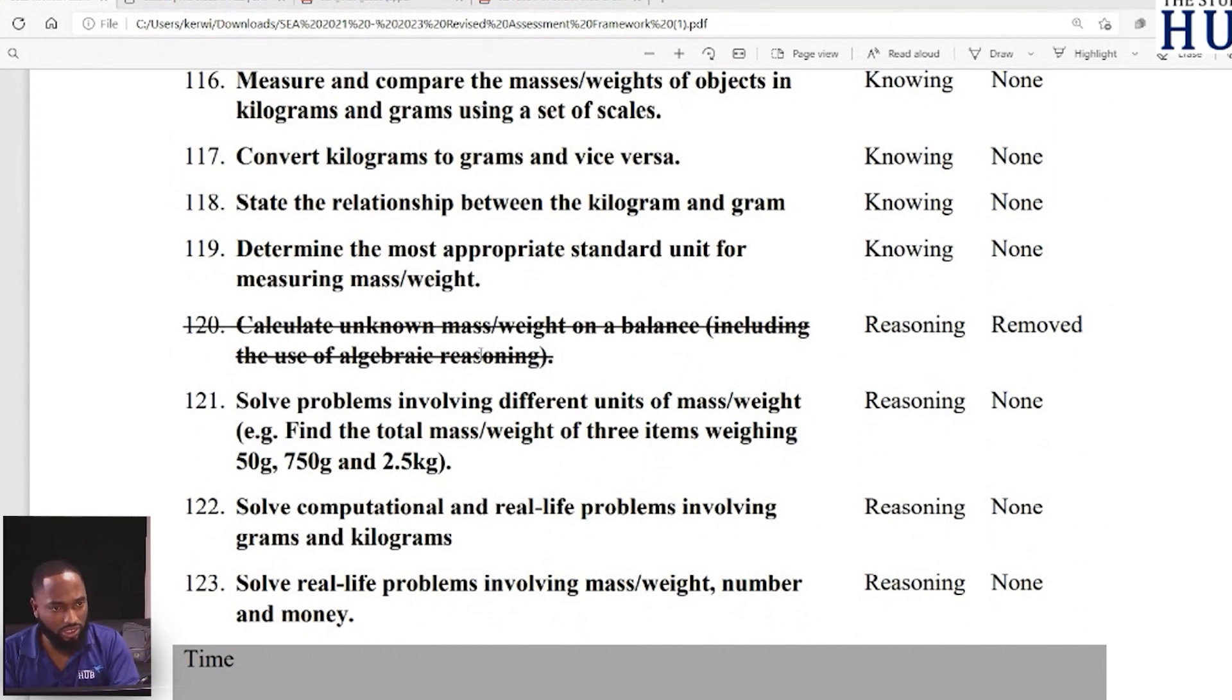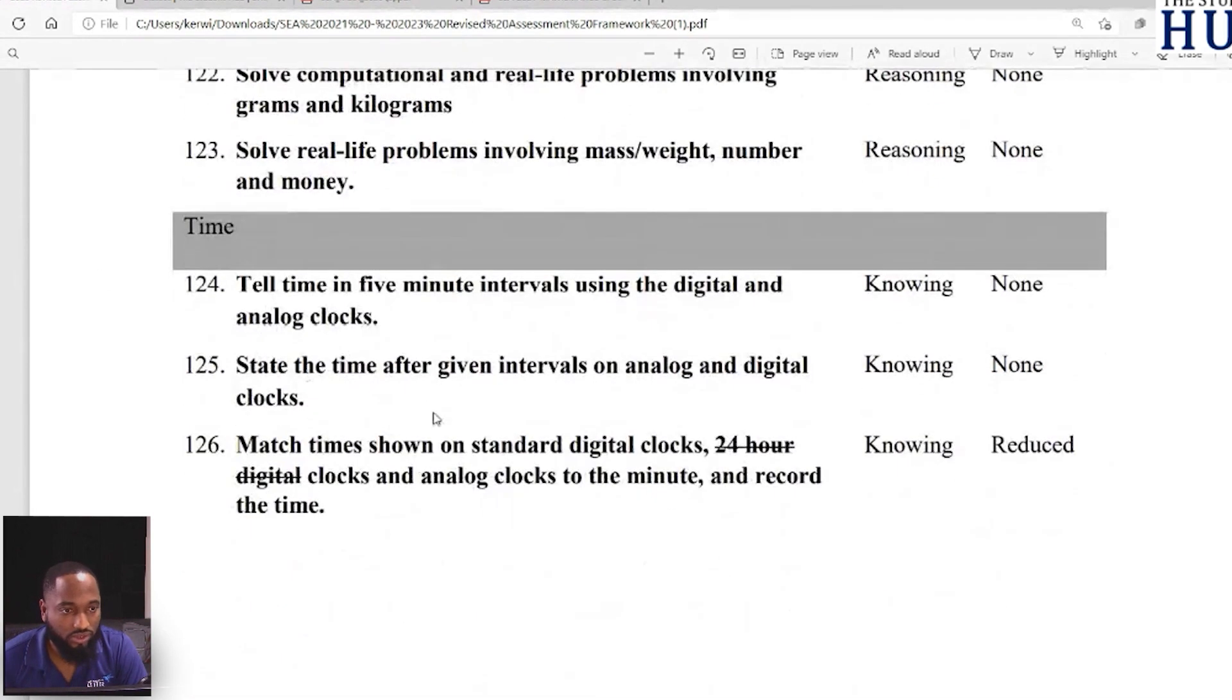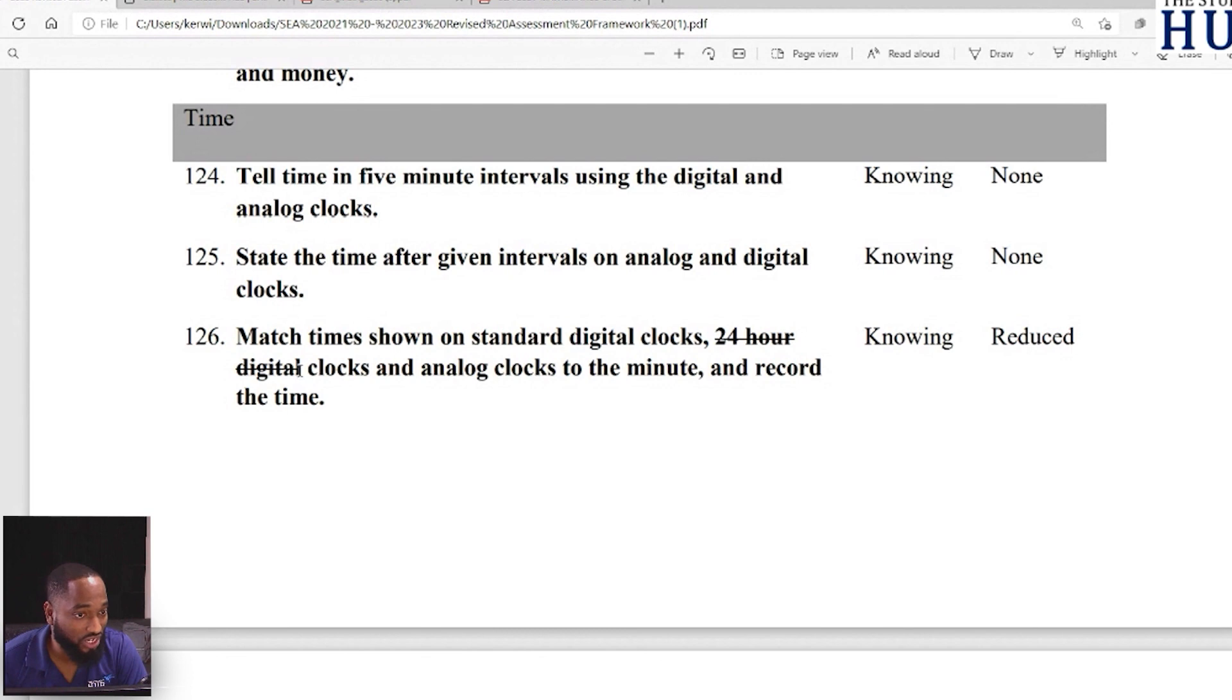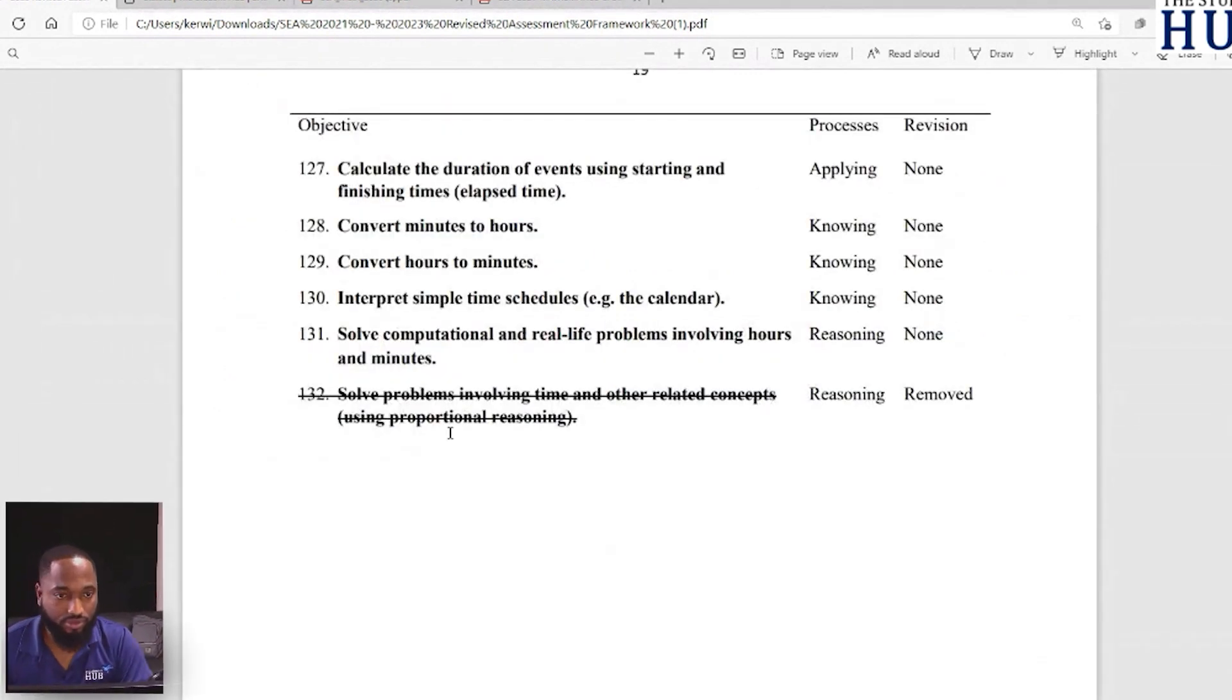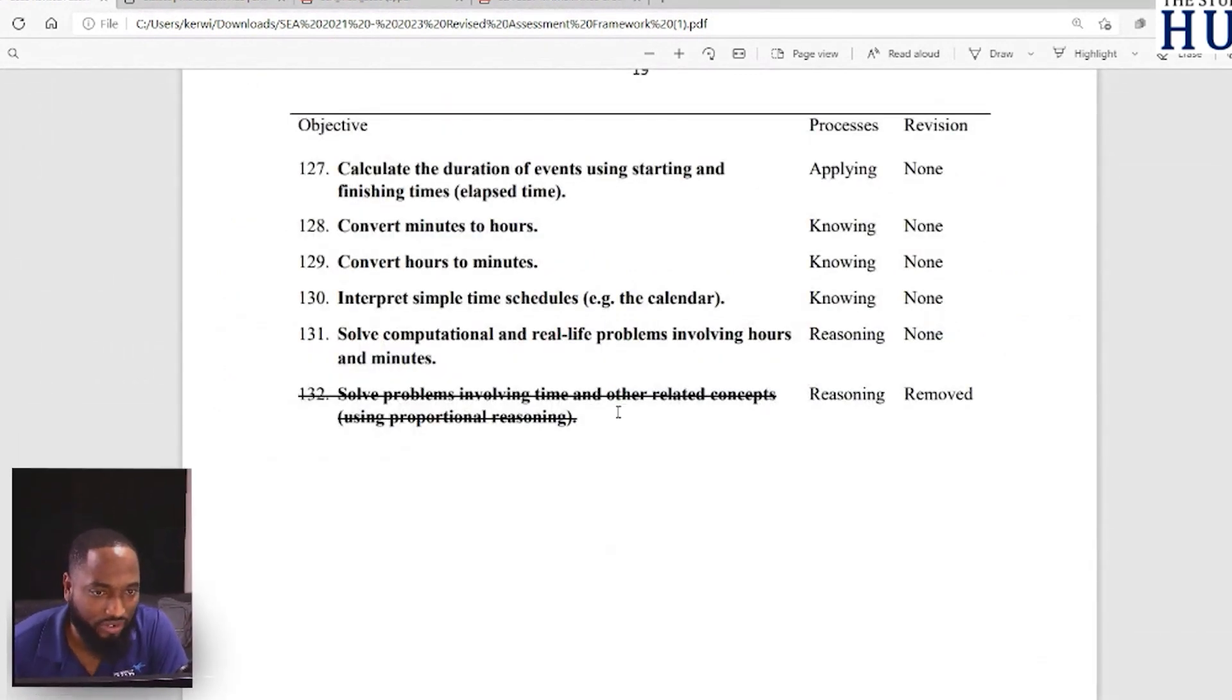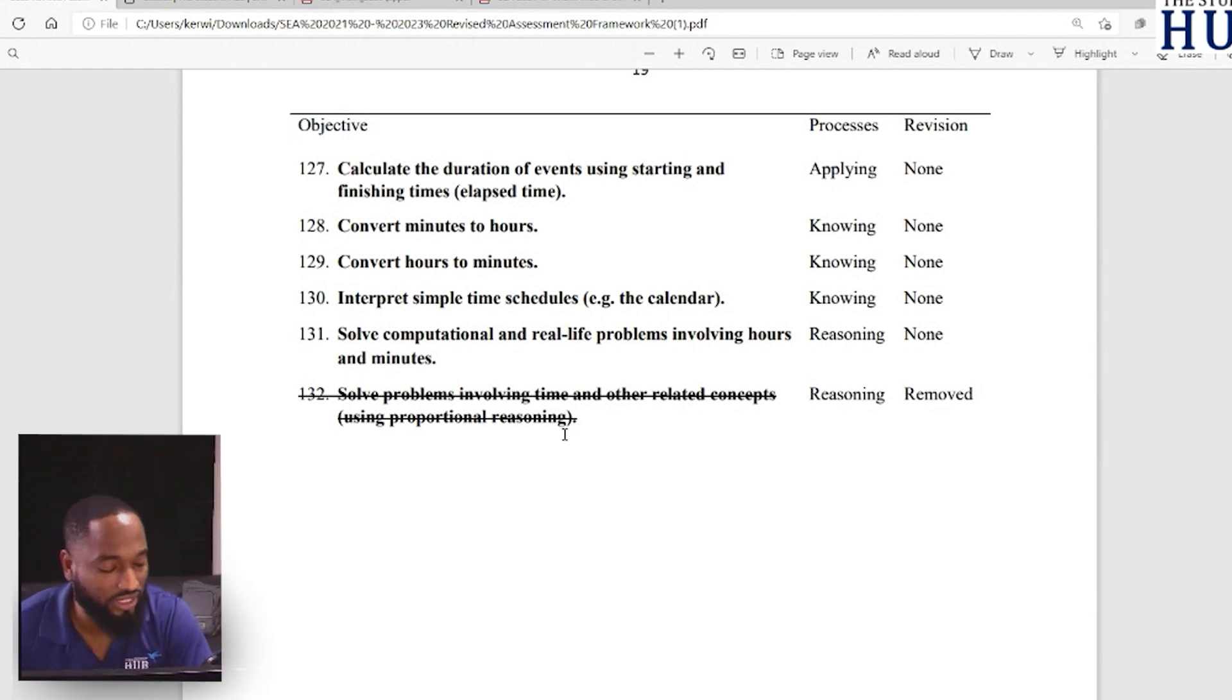Nothing with cm³ or m³. You still could be asked to count the blocks that will fill up this shape, but to work on the volume itself using the formula, we're not really focusing on that. The relationship between metric units of volume, so one liter is 1000 cm³ - those who did past papers some years back know this question comes regularly. Solve problems involving volume capacity - also out.